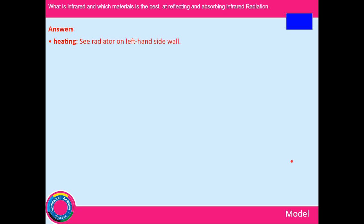Heating: radiators give off infrared radiation — any hot object will. Cooking: the barbecue on the patio is an example. If you put your hand above a cooker you can feel the heat even though you can't see it — that's because it's infrared radiation, which has a heating effect.